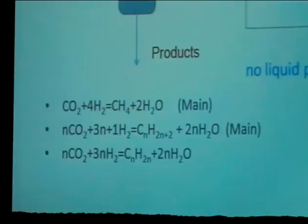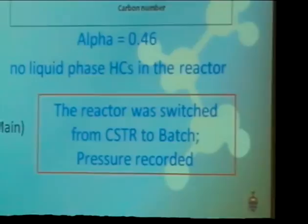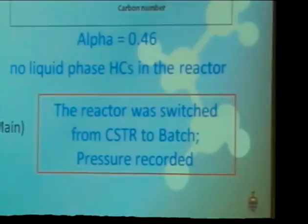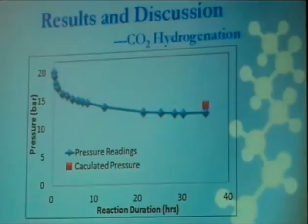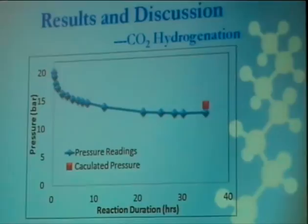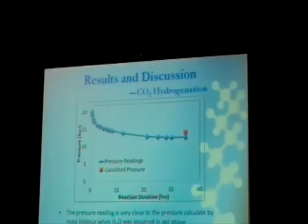So, we ran our CO2 hydrogenation. The alpha is low as you expected. Very high methane selectivity. And then, we switch the reactor from CSTR to batch mode. We record the pressure as you expect. And this is the curve that we have. And then, we calculate the pressure if all the water was in the vapor phase. And this is the point that we have. So, then, if you have a very low alpha, you expect all your products to be in the vapor phase. And to some extent, that is the case.